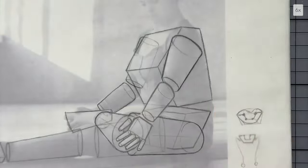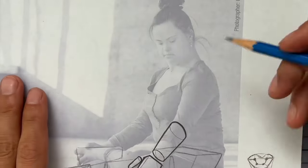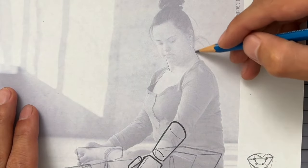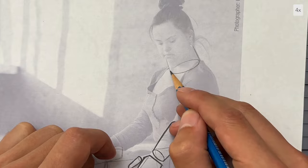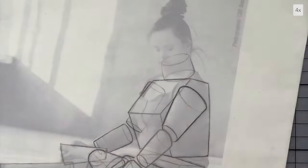And then we are ready to move up the body to the neck and head. I think the neck here works well as a cylinder. I start with the contours and then estimate the ellipse that connects the torso to the neck.